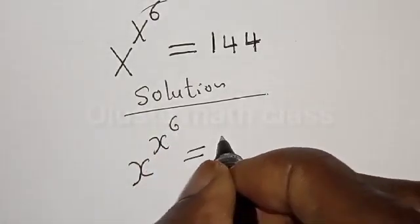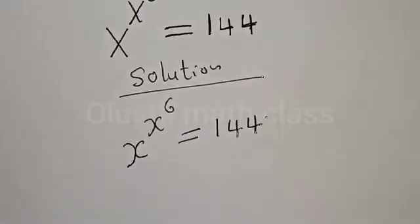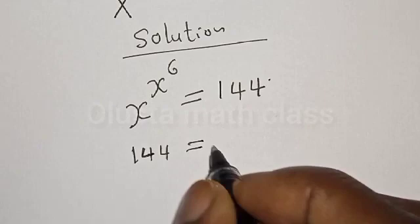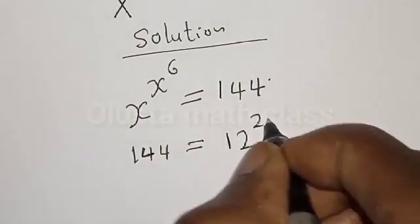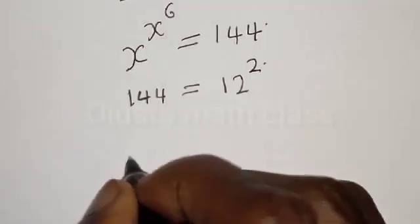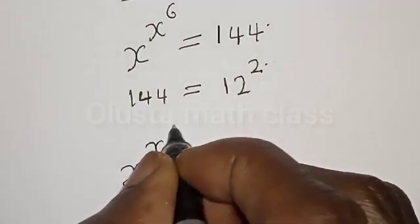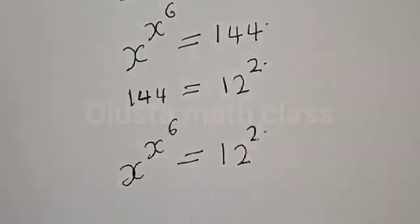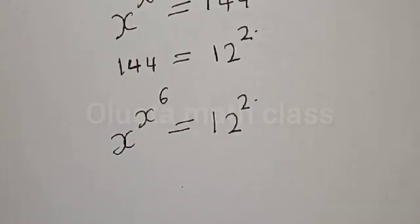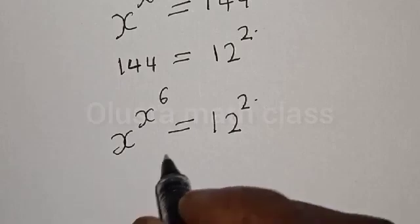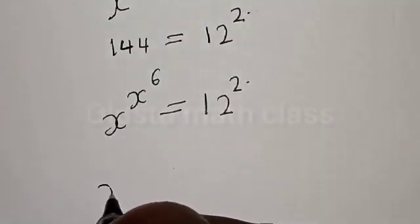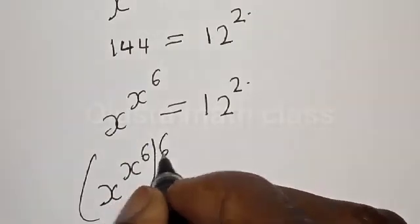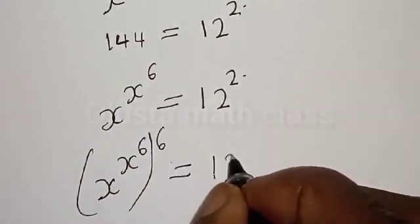We have the given equation s raised to power s raised to power 6 is equal to 144. Note that 144 is equal to 12 squared, so our right hand side becomes 12 squared. Now let's multiply both sides by the power of 6. We have s raised to power s raised to power 6, multiplied by 6, is equal to 12 squared multiplied by the power of 6.